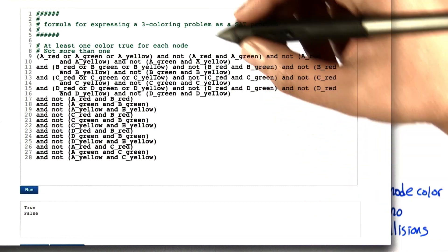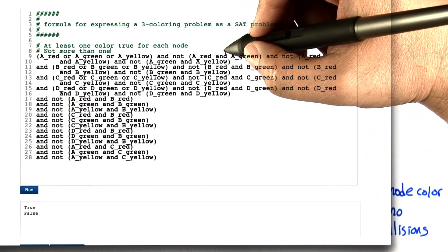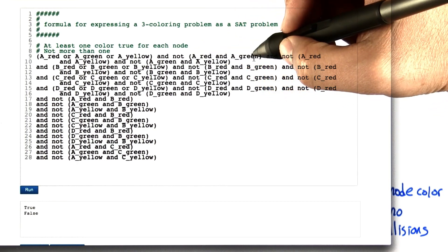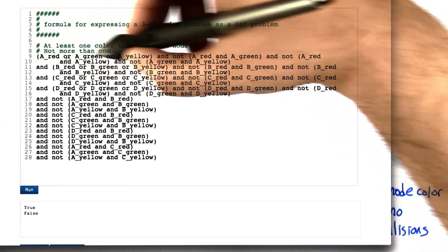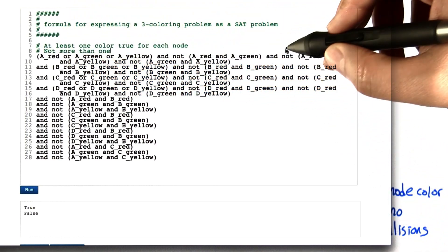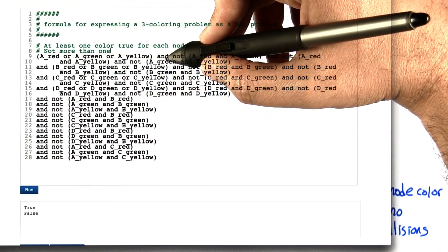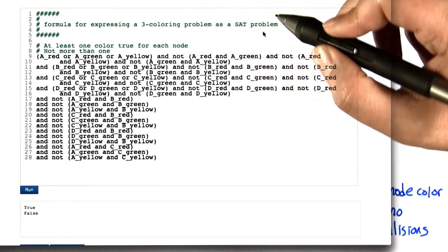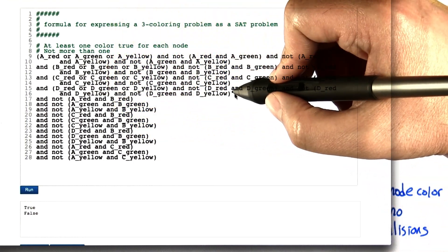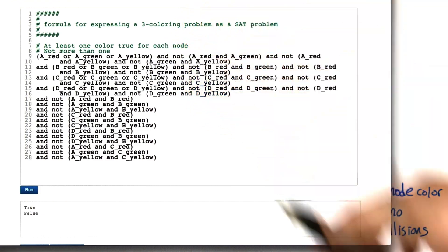And it also has to be the case that no pair of colors can be true for a given node. So it can't be the case that both A_red is true and A_green is true. So that's bad. So there has to be at least one true and not the case that both A is both red and green, not the case that A is both red and yellow, and not the case that both A is green and yellow. And we do that for all four of the nodes. And that tells us that there's a meaningful color assignment to the nodes.